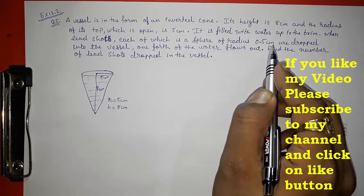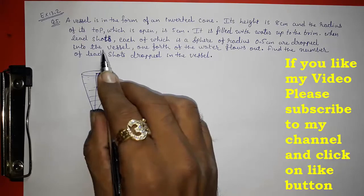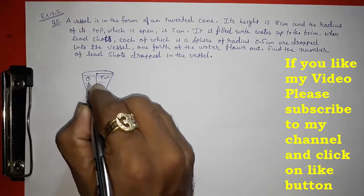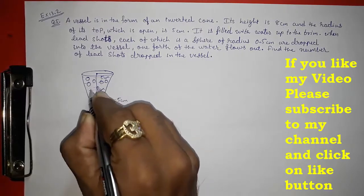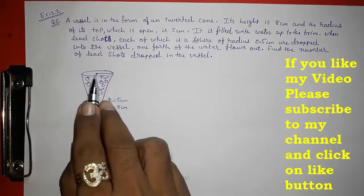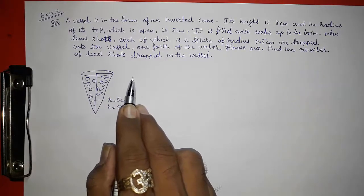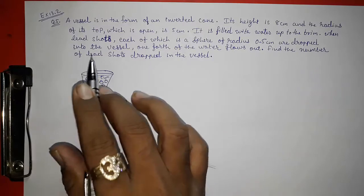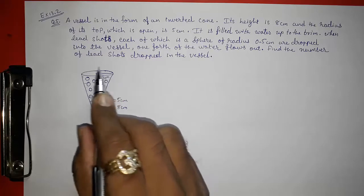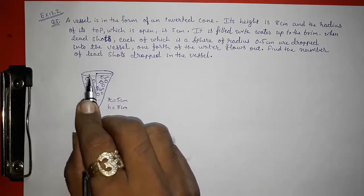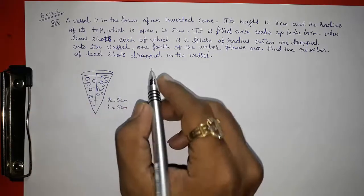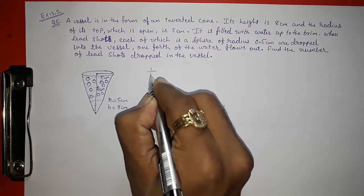Lead shots, each being a sphere of radius 0.5 centimeters, are dropped into the vessel. When these small spherical balls are dropped inside, one-fourth of the water comes out. The volume occupied by the spheres inside the vessel equals the volume of water that flows out — and we know that is one-fourth of the total volume.